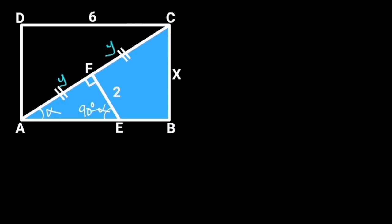The reason is that the sum of angles in a triangle is 180 degrees. Next, let's focus on triangle ABC. Triangle ABC is also a right triangle because each corner of the rectangle is 90 degrees. The sum of angles in a triangle is 180 degrees.